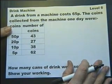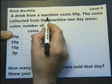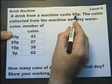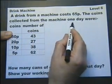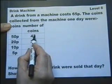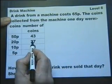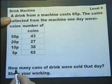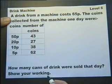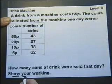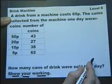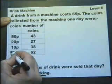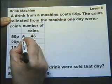Go to a drinks machine. And a drink from the machine costs 65p. The coins are collected in the machine. And one day there were 43, 50p coins, 27, 20p coins and so on. How many cans of drink were sold that day? Well I'm going to show my working out whether the examiner tells me to or not.